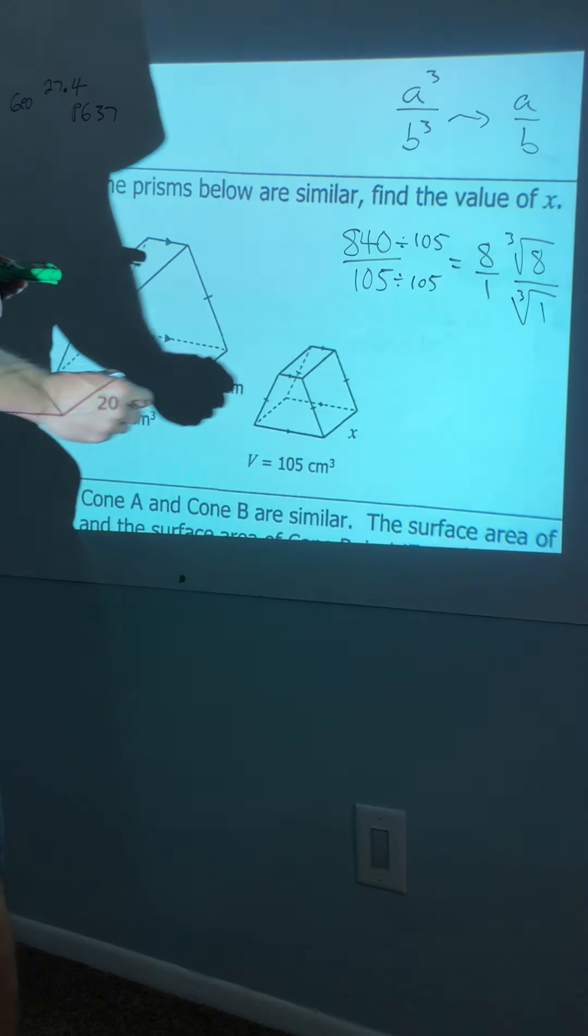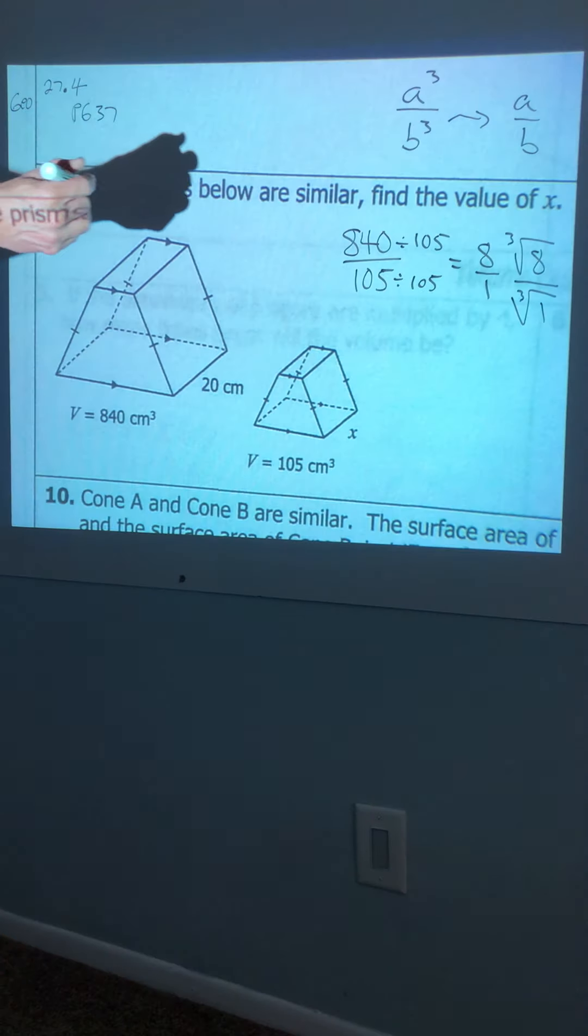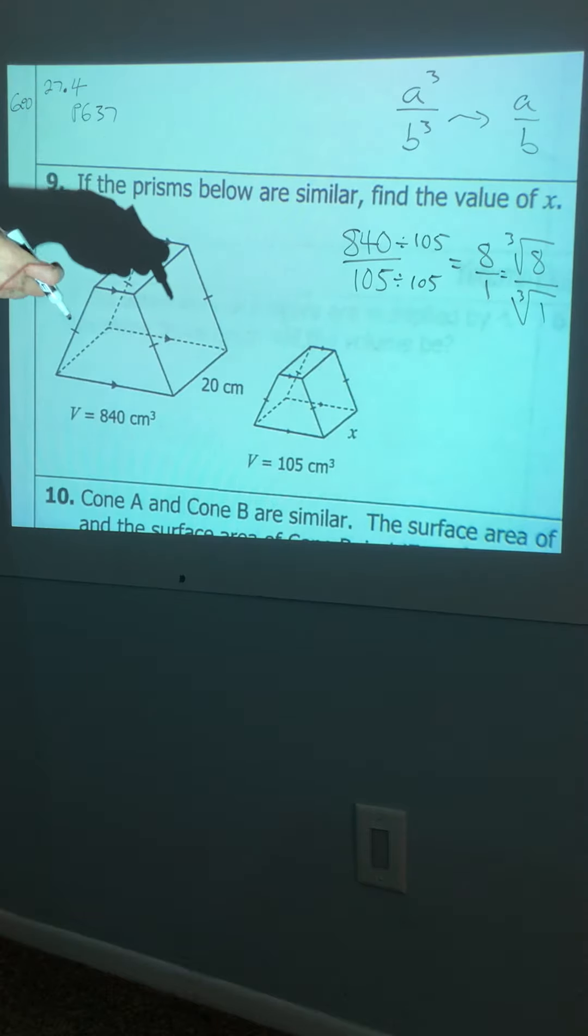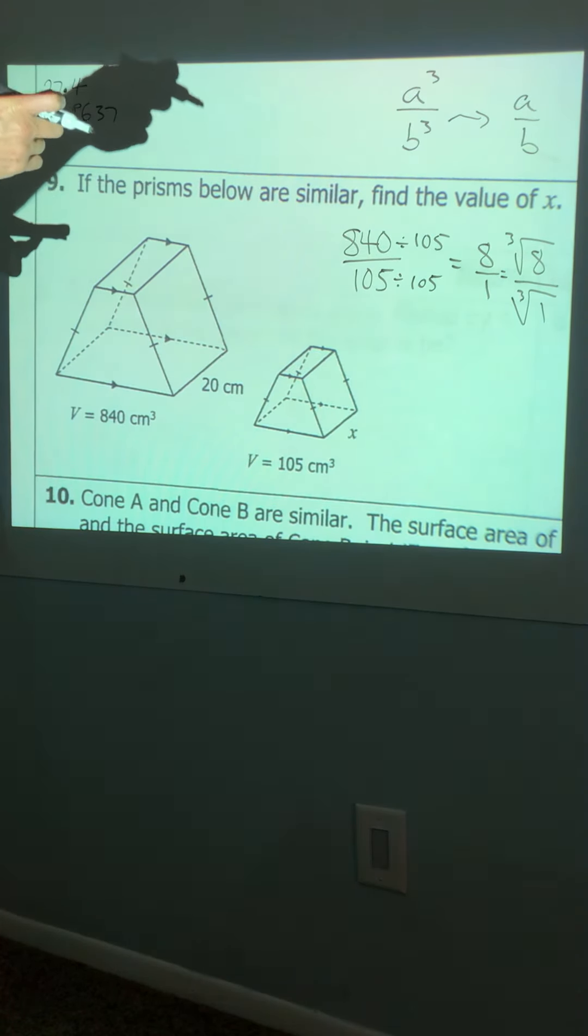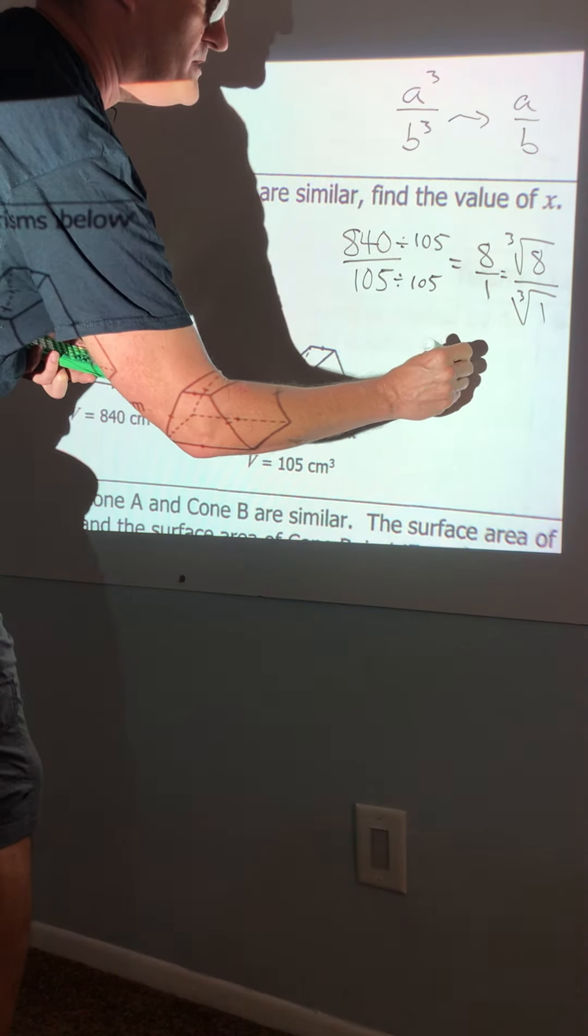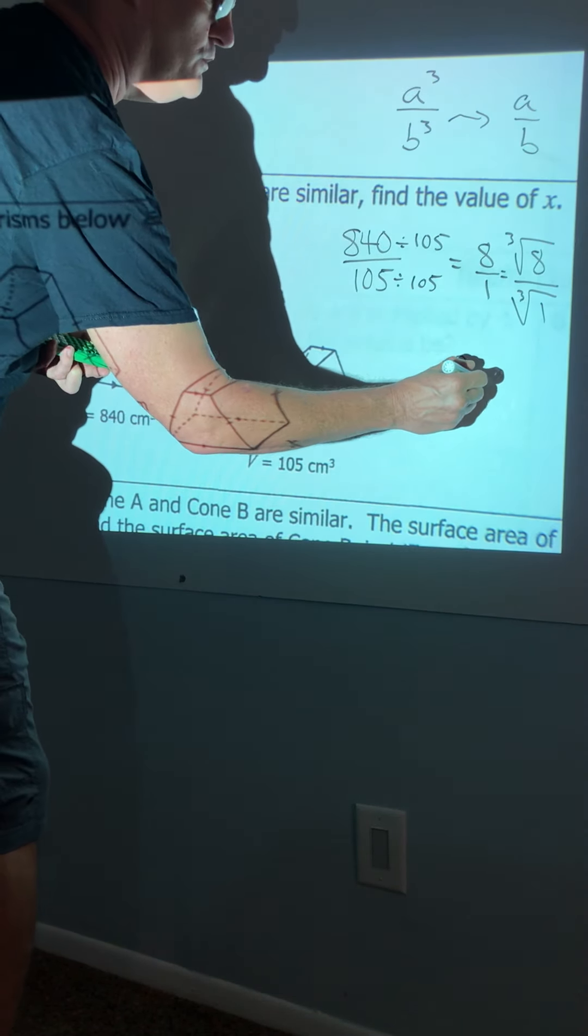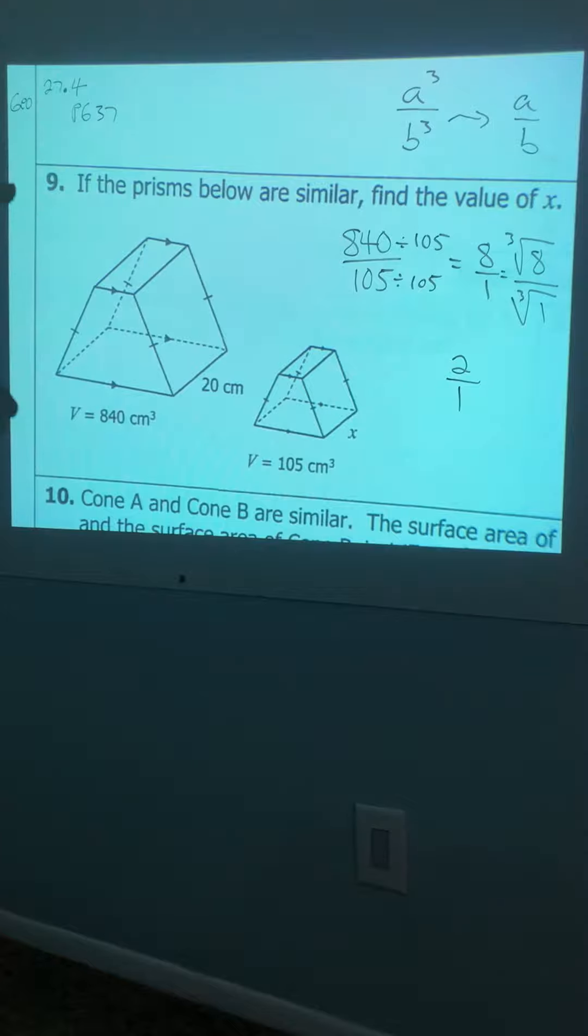And I was going to give it to you in English. You're looking for a number times itself, three times it equals eight. So eight would be two times two times two, but only one comes out. And the cube root of one is one times one times one. So look, it's a two to one ratio.